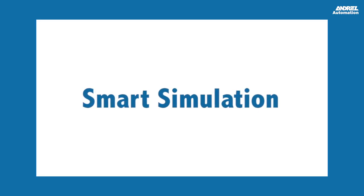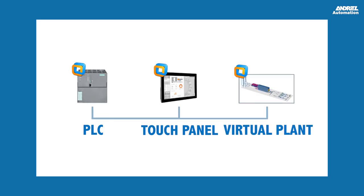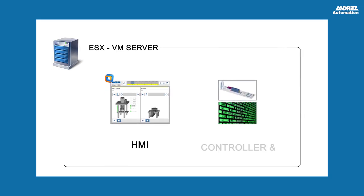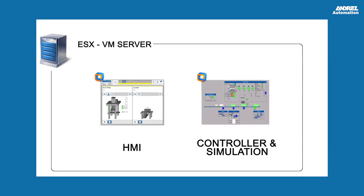Each system is delivered fully tested with the inline simulation functionality. With inline simulation, the functional behavior of the machine is tested against application programming prior to startup, and is also used for operator training. The system consists of a programmable logic controller, a touch panel, and a virtual plant. Both the user interface and the controller with inline simulation are running on virtual machines — one representing the real HMI, and the other representing the real machine and plant.